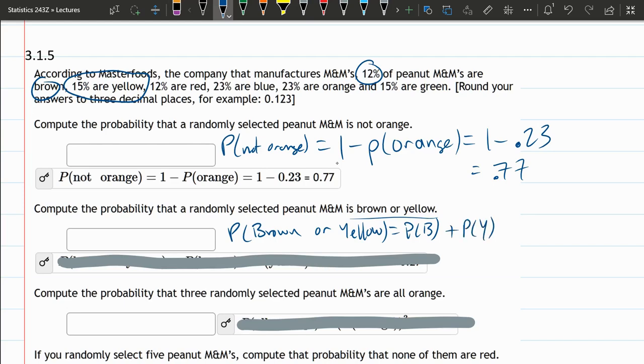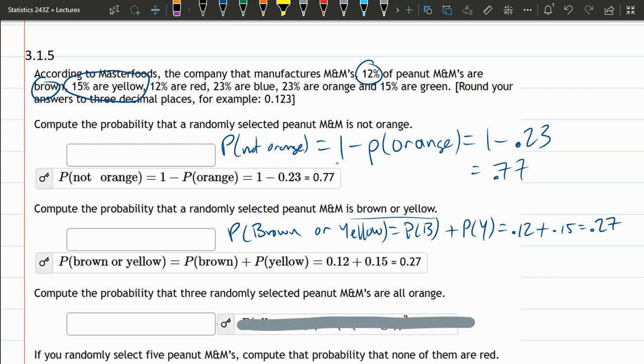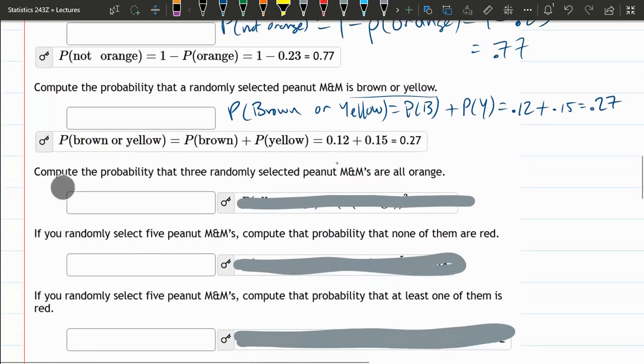So B for brown, Y for yellow. Now these probabilities, one was 12, was brown. So 12% as a decimal, 0.12. Yellow, 15%, 0.15. You add these up, you get 0.27. That'll be right here, 0.27.